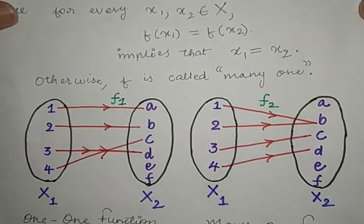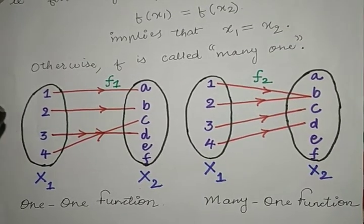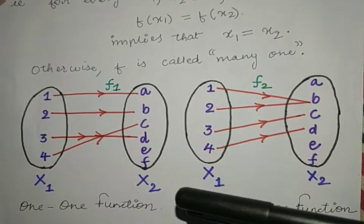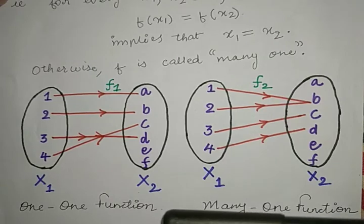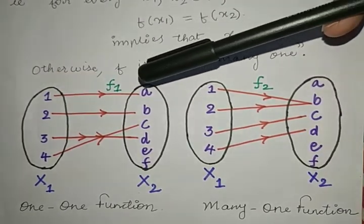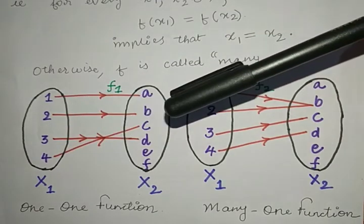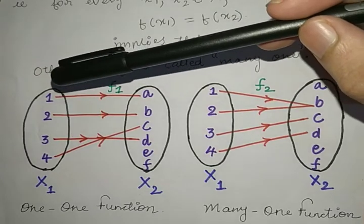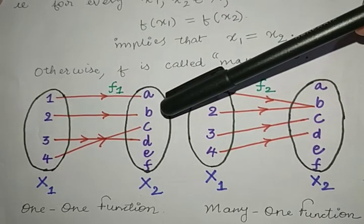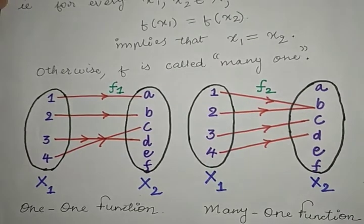Let us look at the diagrams and understand what we mean by one-one and many-one function. You can see here the elements 1, 2, 3, 4 in the domain x1 and in the co-domain x2 you have the elements a, b, c, d, e, f. The function f1 takes the element 1 to a, then 2 to b, then 3 to d and 4 to c. You can see that different elements have different images — no two elements go to one single element — so this function becomes a one-one function.